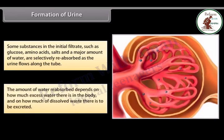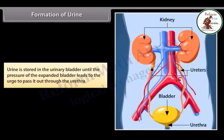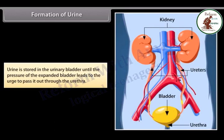The amount of water reabsorbed depends on how much excess water there is in the body and how much dissolved waste there is to be excreted. Urine is stored in the urinary bladder until the pressure of the expanded bladder leads to the urge to pass it out through the urethra.